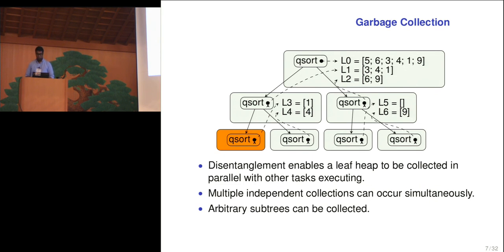So we have hierarchical heaps. We have disentanglement. What does collection look like? Now, what disentanglement allows is for a leaf heap to be collected in parallel with other tasks executing. This is because the memory in scope of that collection cannot be accessed by any of the parallel executing tasks. And we can continue on this trajectory. We can have multiple leaves collecting independently of each other. And we can even have arbitrary sub-trees being collected in parallel with other tasks, either collecting or executing.